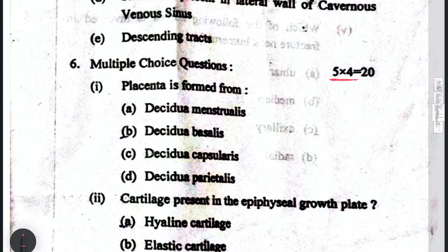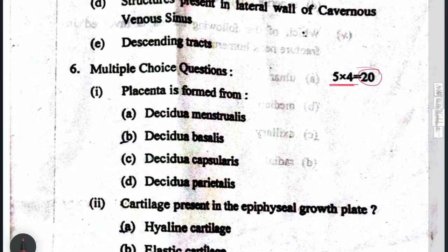Question number 1: there are 5 questions of 4 marks each, making 20 marks. Question 1 is: placenta is formed from — Decidua menstrualis, Decidua basalis, or Decidua basalis?